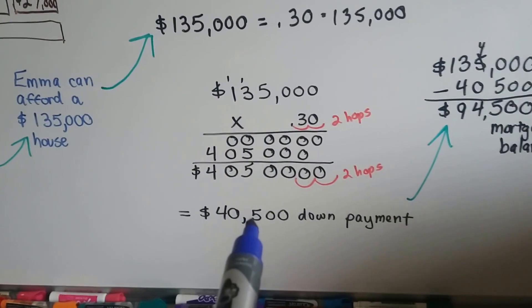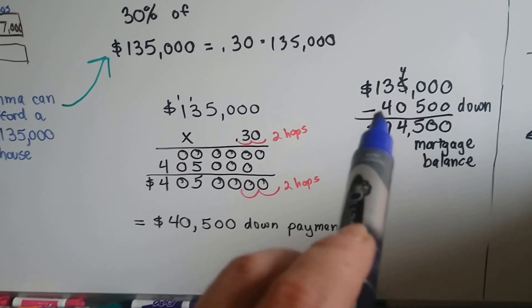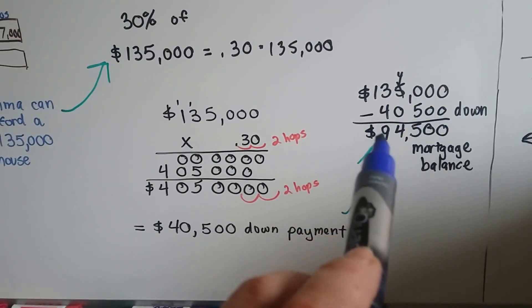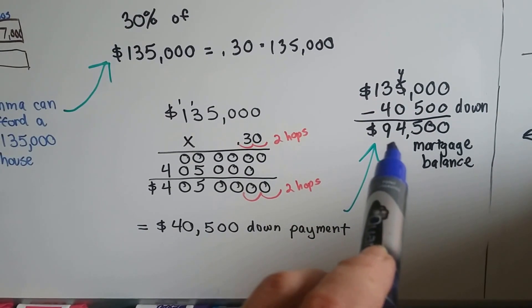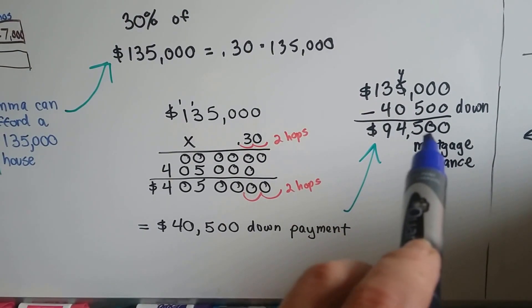We take the $40,500, and we subtract it from the $135,000 house that she finds, and we find out that her mortgage balance will be $94,500.